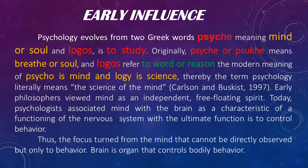Psychology evolved from two Greek words: psyche, which means mind or soul, and logos, which means to study. Originally, psyche or psuche means breath or soul, and logos refers to word or reason. So the modern meaning of psychology is the science of mind. Early philosophers viewed mind as an independent, free-floating spirit. Today, psychologists associate mind with the brain as a characteristic of the functioning of the nervous system, with the ultimate function being to control behavior. The brain is the organ that controls bodily behavior.